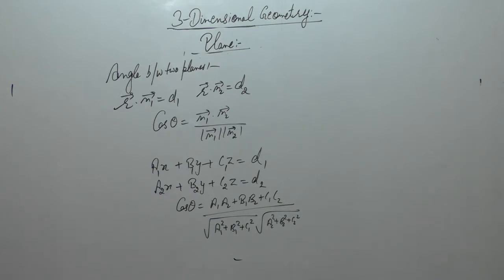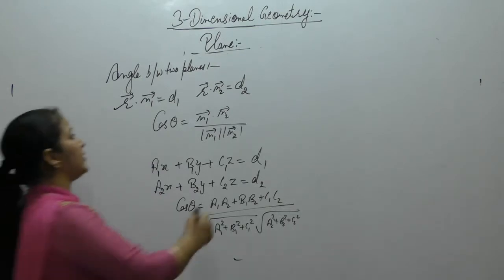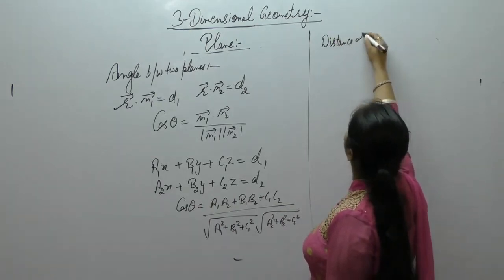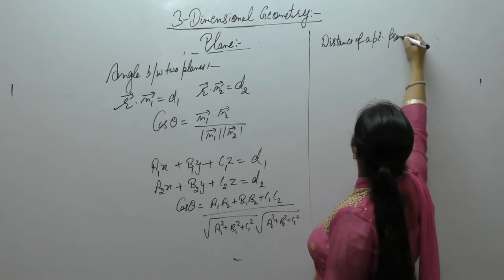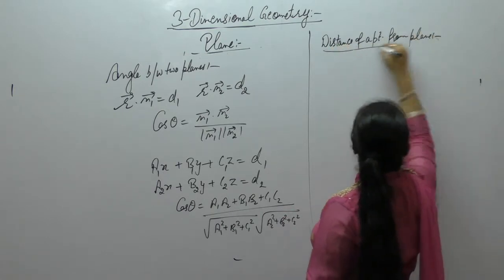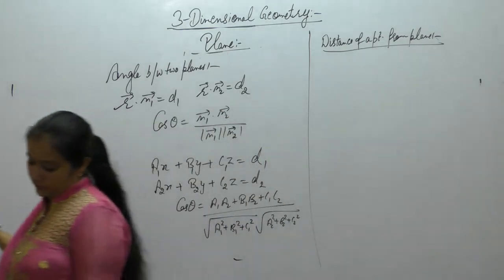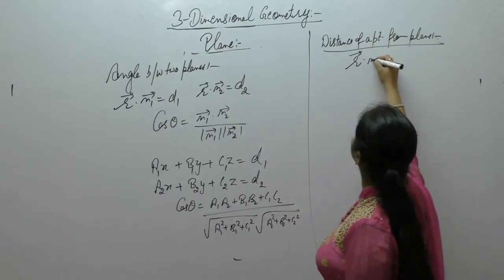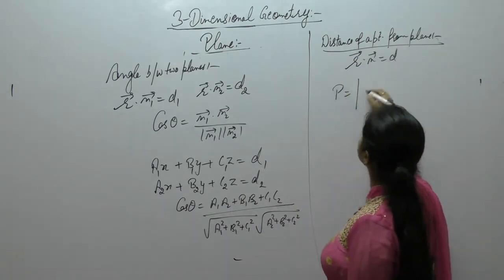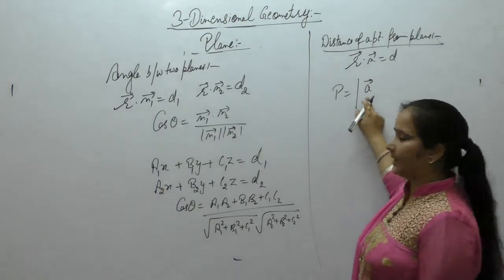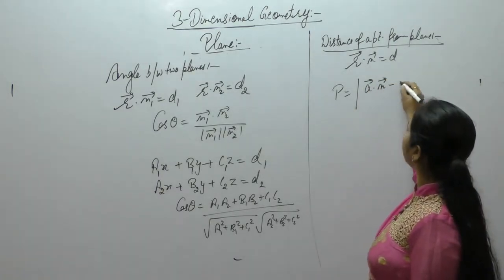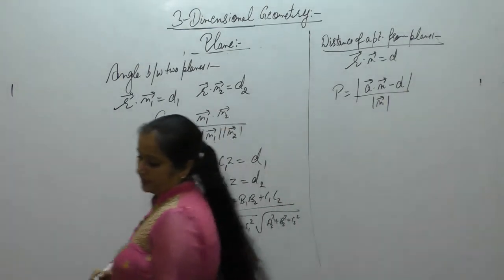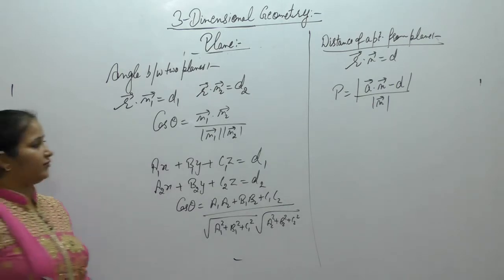The next is distance of a point from a plane. If we want to find the distance of a plane, let plane has equation r.n is equal to d, then distance is, let plane passes through point a, so a.n minus d upon magnitude of n vector.